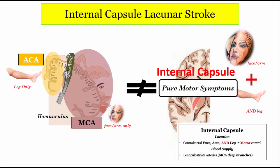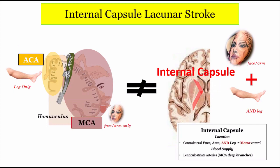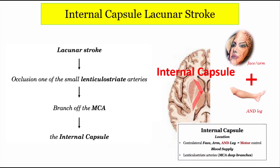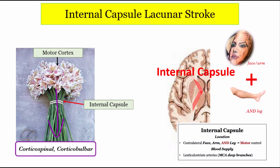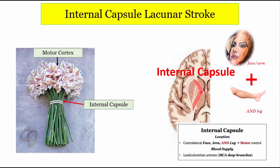Furthermore, an internal capsule lesion would present with purely motor symptoms, but an ACA or MCA stroke could easily have lots of other signs and symptoms, which we went over in detail in part one of our series. So this is a left-sided lacunar stroke caused by occluding one of the small lenticulostriate arteries that branch off of the MCA supplying blood to the internal capsule. The internal capsule is the tight bundle of motor axons that have traveled down from the homunculus in the primary motor cortex of the frontal lobe and through the brain's white matter. The fibers in the internal capsule will eventually turn into the corticospinal and corticobulbar tracts when they reach the brainstem and spinal cord. Because these fibers carry only motor inputs, that's why you get a pure motor hemiparesis.